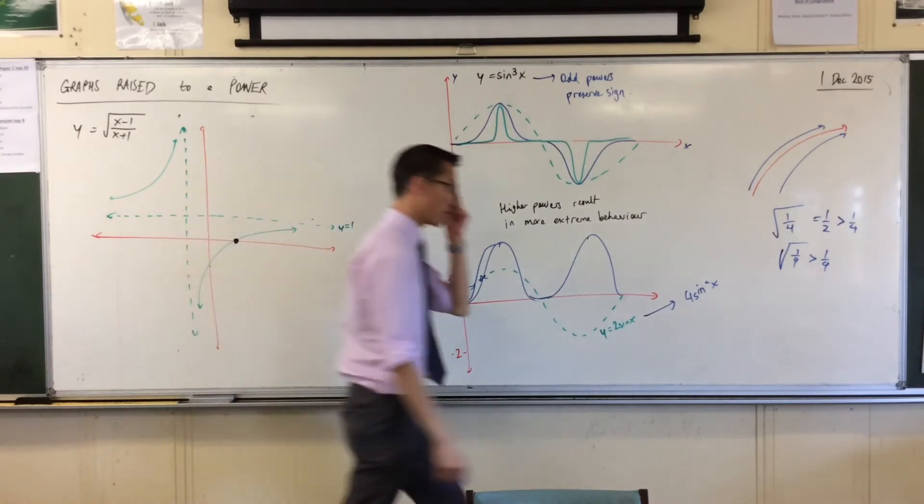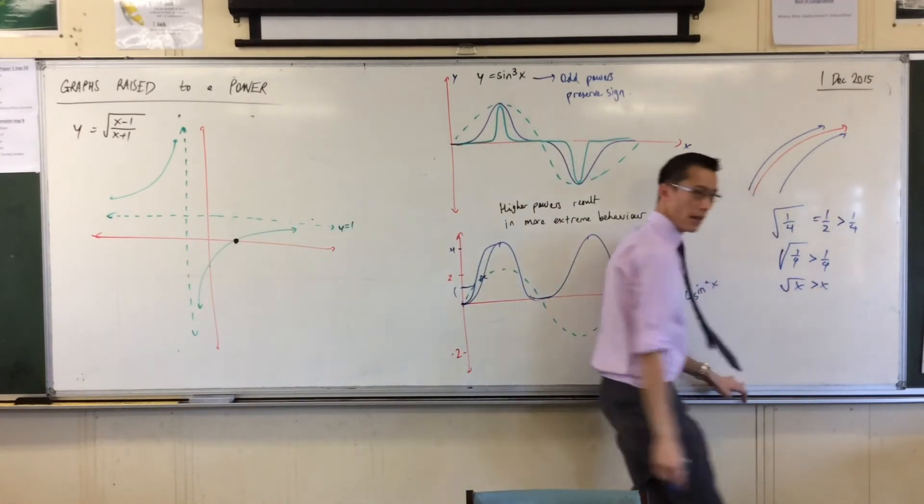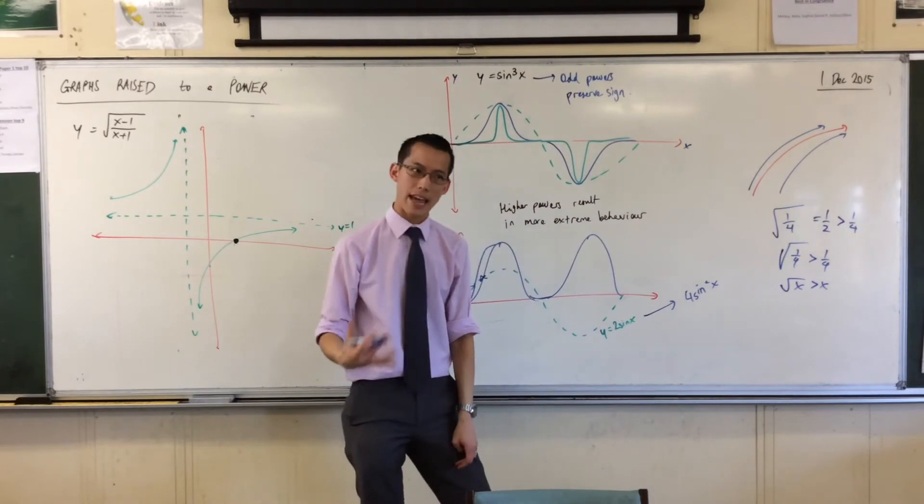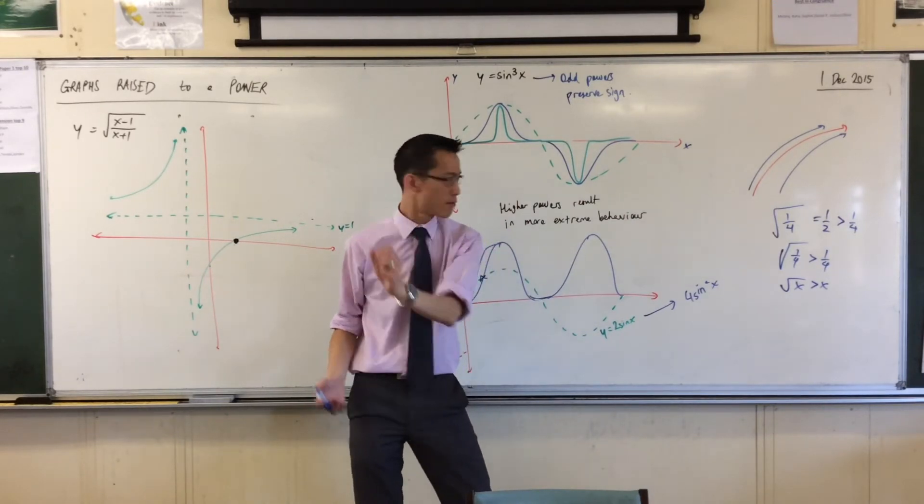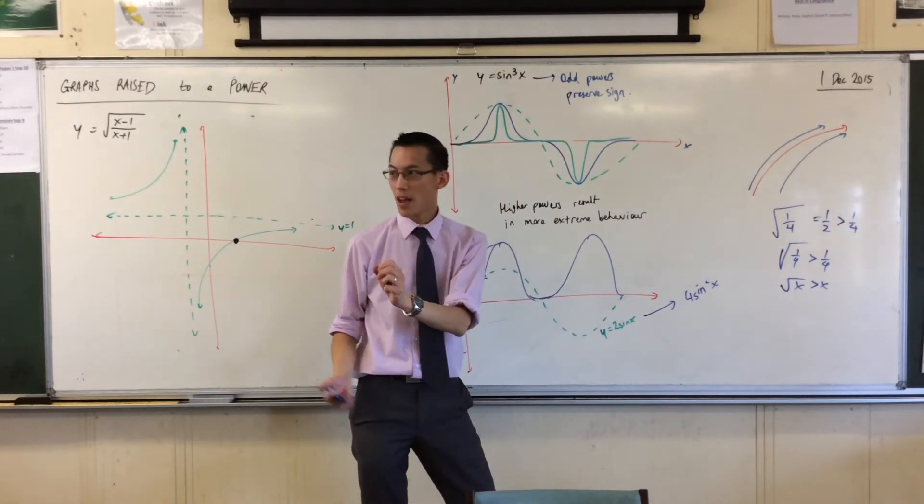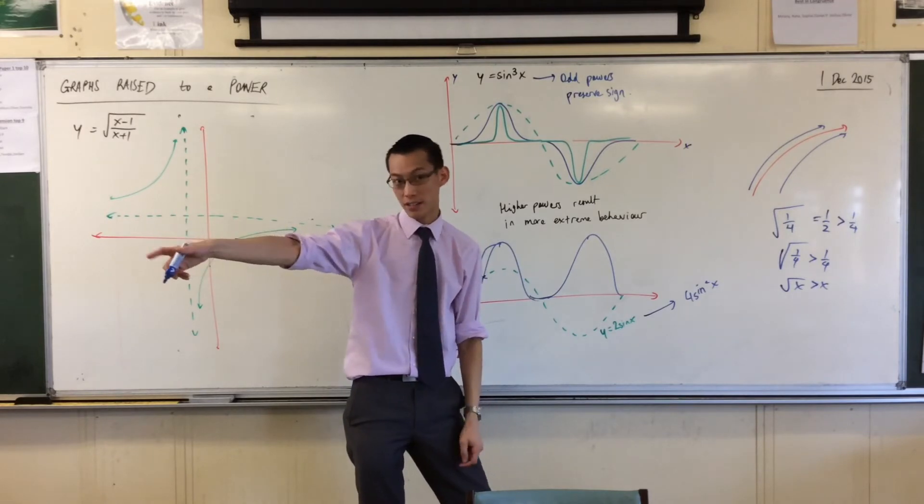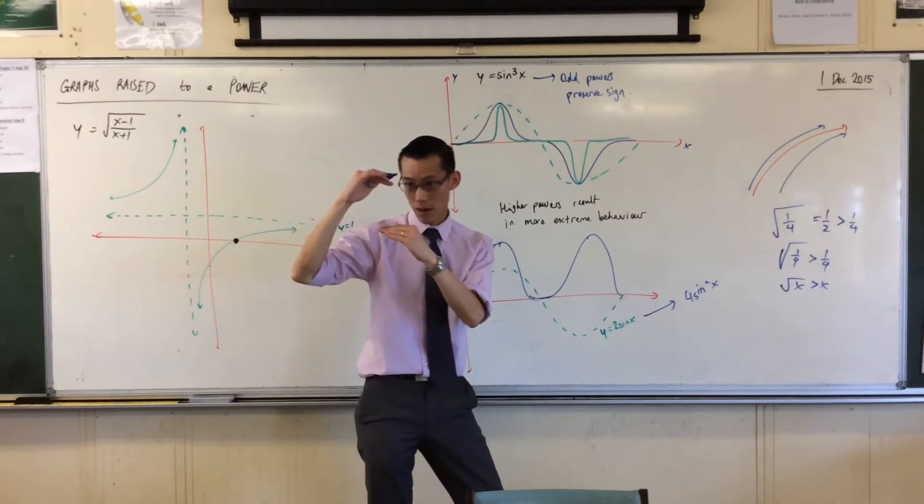In fact, the square root of x, this is going to be part of my table that we draw in a minute. The square root of x is always bigger than x, provided, provided what? Provided that x is a fraction that is between 0 and 1, right? Between 0 and 1.